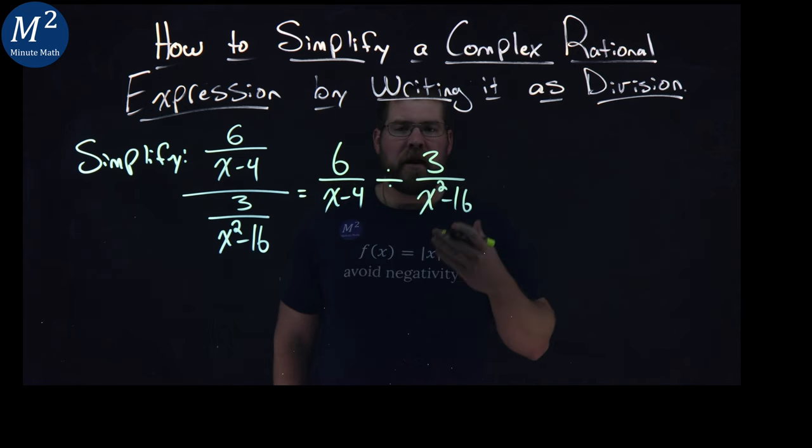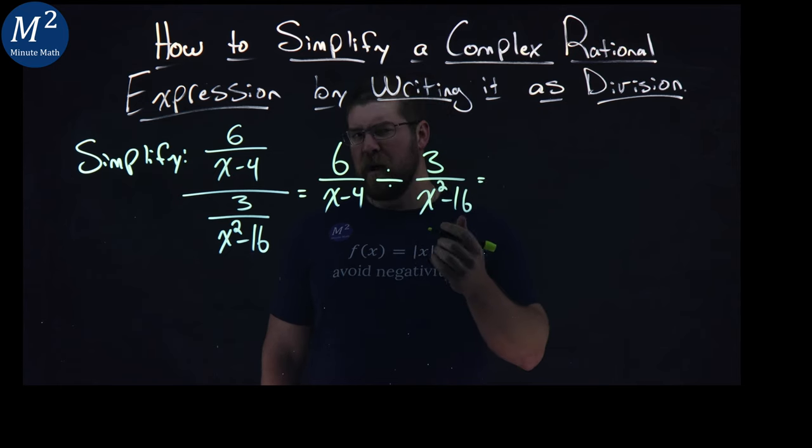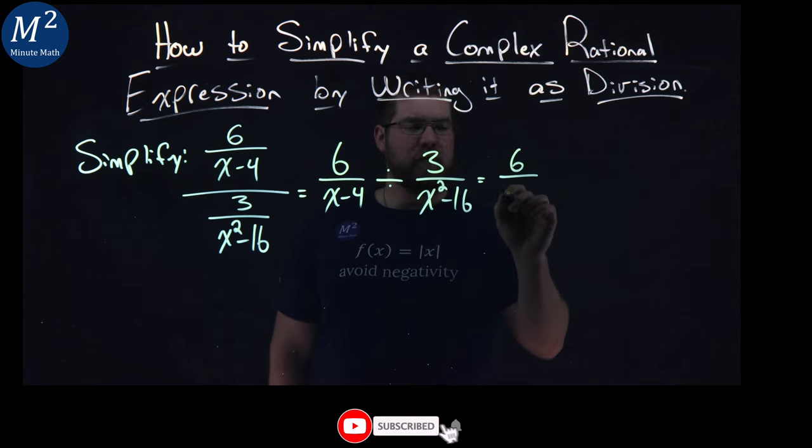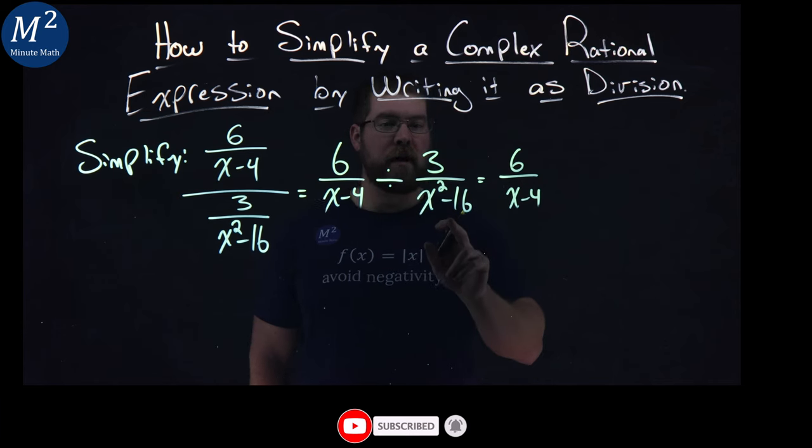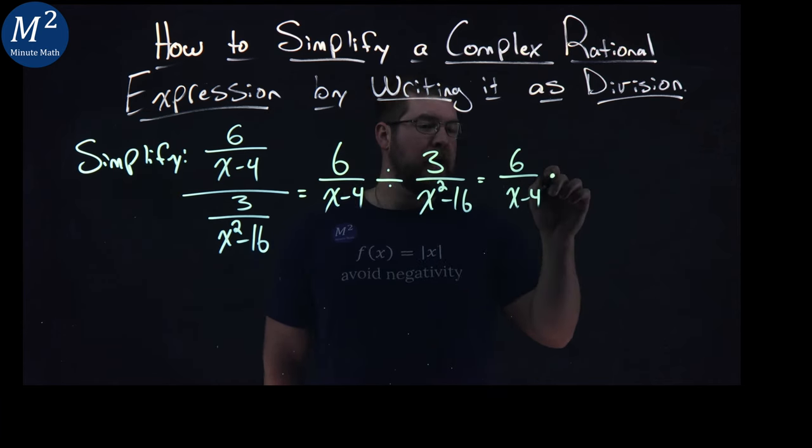Now, if you watch my other videos, I really prefer multiplication over division, and probably you do too. I have 6 over x minus 4, and instead of dividing this fraction, 3 over x squared minus 16, I'm going to multiply by its reciprocal.